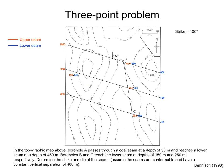From these structure contours, we can determine the strike of the seams. This is just the angle that the structure contours make with the north. Notice that the seams decrease in elevation and dip towards the south. Therefore, if we use a right-hand rule format, the strike is 106 degrees and the dip direction is 196 degrees.